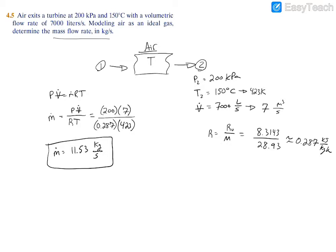Now if you understand how the units work out to kilograms per second, great, you can stop watching. But in case you don't, let me explain it for you. This 200 is in kilopascals, so we have kilopascals in the numerator, multiplied by that 7. That 7 holds meters cubed per second.